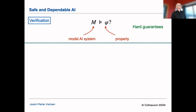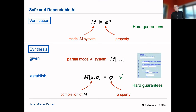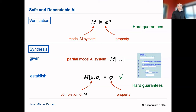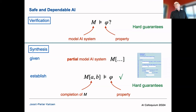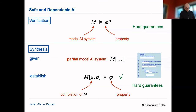In the second part I'll talk about synthesis, where the input is a partial model — a skeleton with gaps. You know only the outline of the system, and the question is whether you can find a completion of this model — tweaking symbolic components A and B — such that the completed model satisfies the property of interest. In contrast to verification, we're not given a concrete model but only a skeleton; it's more of a design exploration question.